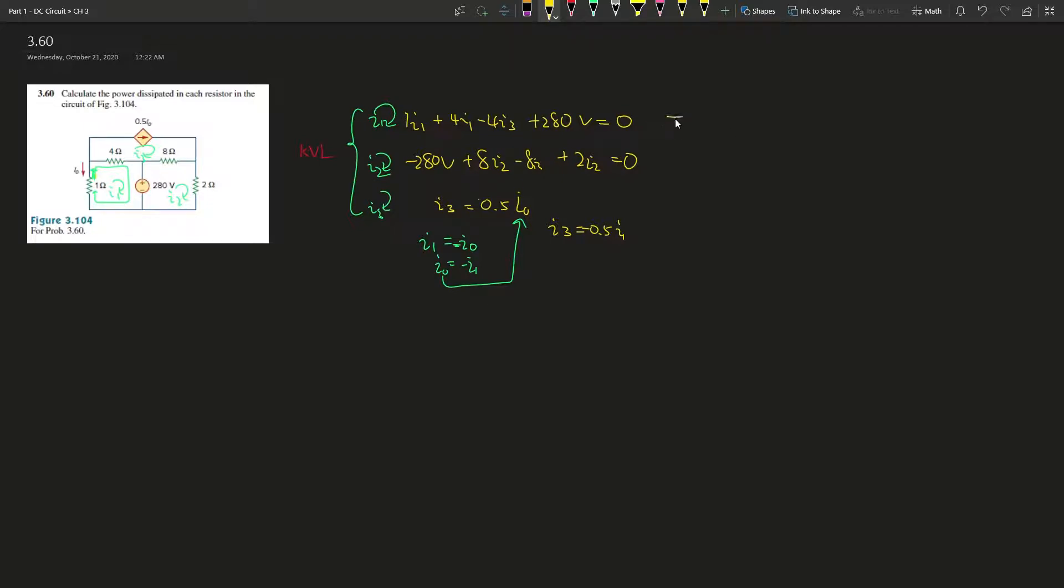So if we expand this one, this is going to be 5I1 minus 4I3. I3 is negative 0.5 I1, so that is going to be plus 2I1 plus 280 volts equals zero, or negative 280 volts. That would be 7I1, and I1 is going to give us negative 40 amperes.